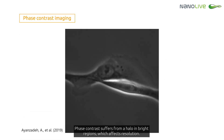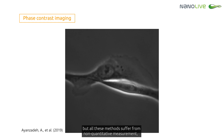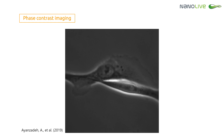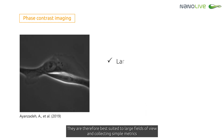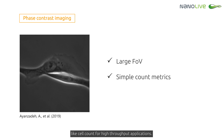However, phase contrast suffers from a halo in bright regions, which affects resolution. Other phase imaging techniques were developed, such as differential interference contrast, but all these methods suffer from non-quantitative measurement, which reduces their specificity, resolution and contrast. They are therefore best suited to large fields of view and collecting simple metrics like cell count for high-throughput applications.